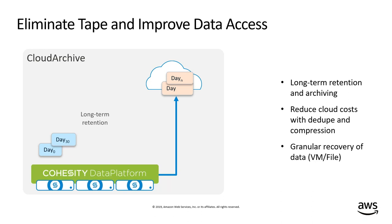Having deduplication and compression capability provides tremendous cost benefits to customers. It also improves data access — no longer do you need to make a manual request to retrieve a tape off-site and load it into a tape library. Now you can retrieve it directly through software with an API call or through the GUI. That's much more granular. You don't need to rely on a manual process, and you have a lot of granularity to recover a single VM or a single file, improving your recovery time significantly.